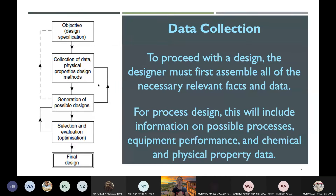The most important data includes possible processes, equipment performance, and chemical/physical property data. The most critical is having a complete process description: equipment, flow, and operating conditions — temperature, pressure, and composition. For Report 1 this matters less, but when you get to mass balance and energy balance, not having temperature, pressure, and composition will be a headache. I supervise four groups; the other five groups are with Madam Nurul Akma.